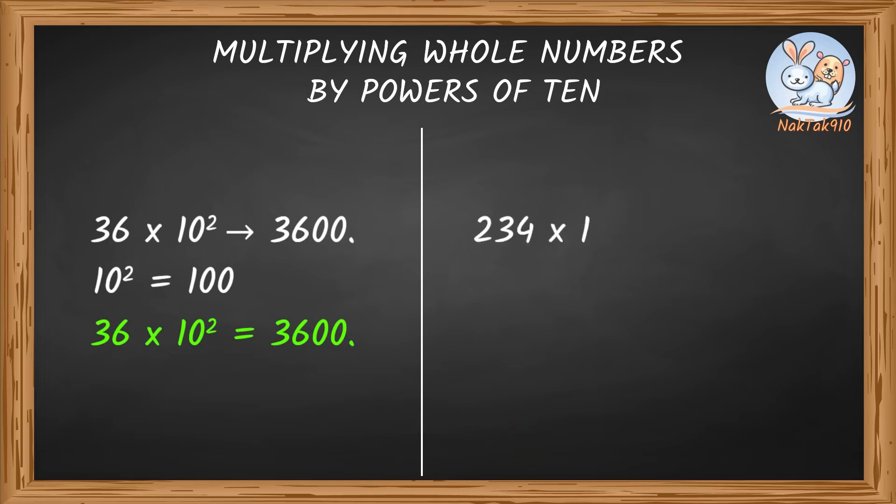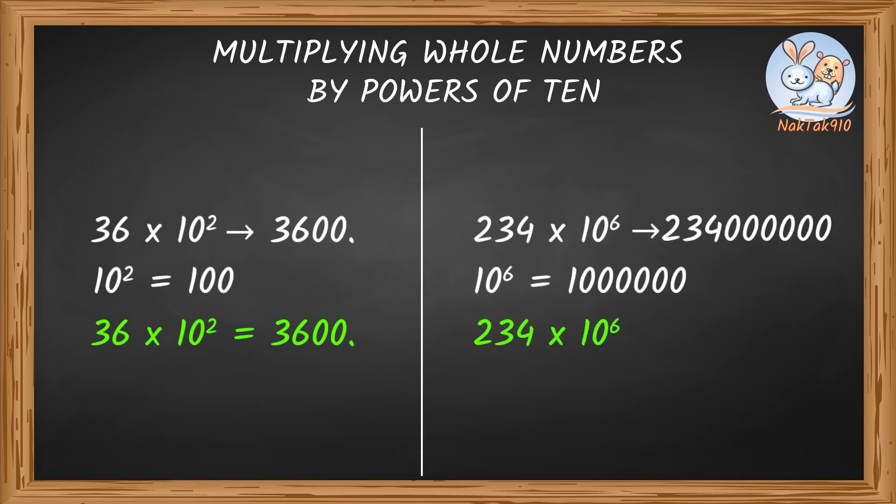234 times 10 to the power of six. 10 to the power of six means one followed by six zeros. 10 to the power of six is equal to one million. So, add six zeros to the right. 234 million! 234 times 10 to the power of six gives us 234 million.